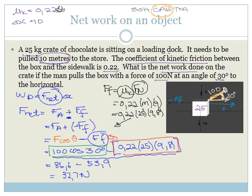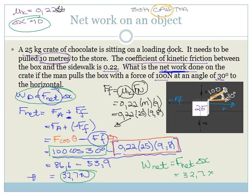Be careful, grade 12s — they did not ask for the net force, they asked for the net work done. Always make sure what you've answered is what they asked. So the net work done: W_net = F_net·ΔX = 32.7 × 10 = 327 joules. This is one method. The other way is to work out the work done by the applied force and the work done by friction separately and add them — which I'll show you on the next slide.